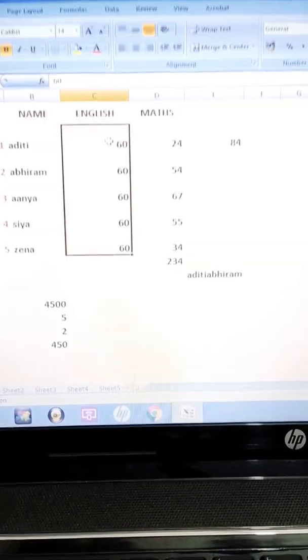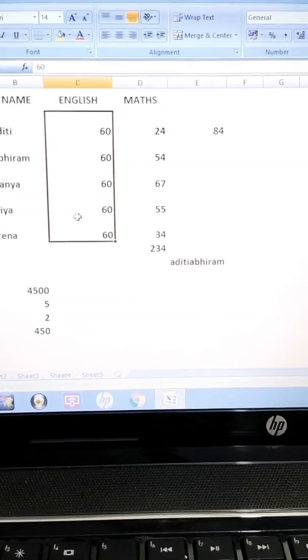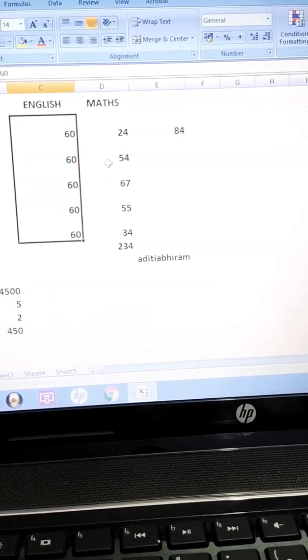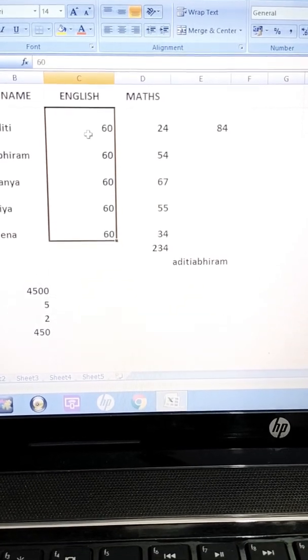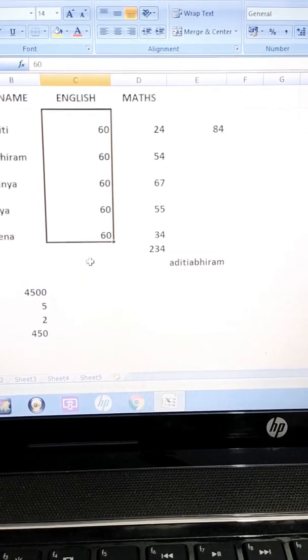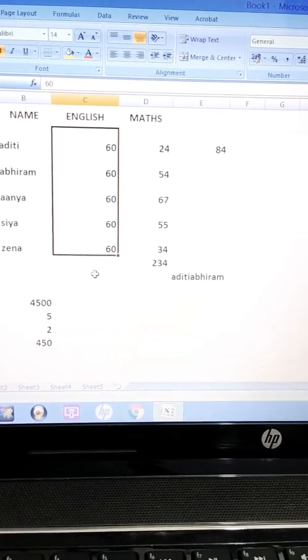Now they are saying if you want to give any name, like earlier I selected D2 to D6, the name was coming D2 to D6. This range I have selected. But now they are saying if you have selected any range and you want to use it further, you can give one name also. You don't have to write again C2 to C6, D2 to D6. You can give one name also.